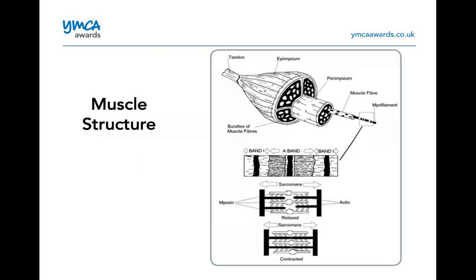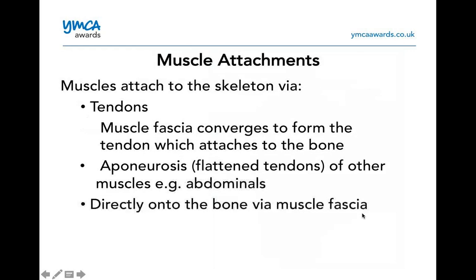Looking at the structure of a muscle and the breakdown of how the muscle fibre looks — you're looking at the myosin and actin. Muscles attach to the skeleton via tendons. We have muscle fascia, which converges to form the tendon, which attaches to the bone. We've also got an aponeurosis, which is flattened tendons of other muscles — for example, the abdominals — and these attach directly onto the bone by muscle fascia.